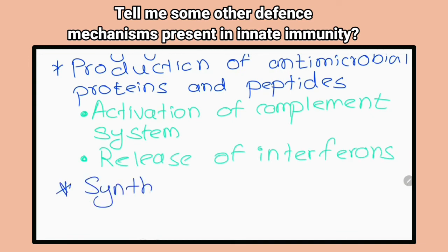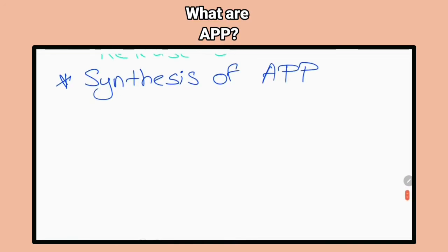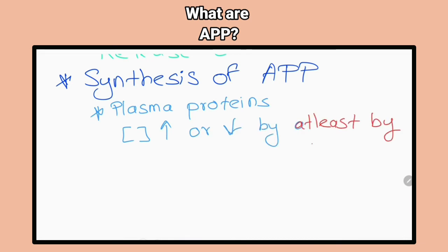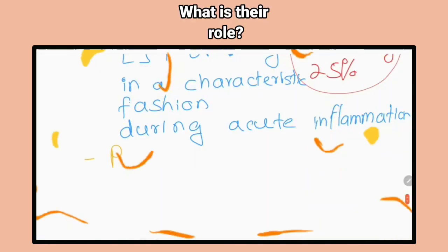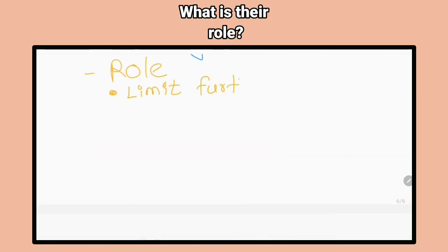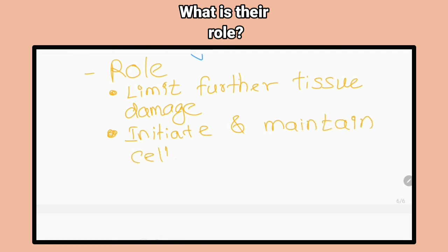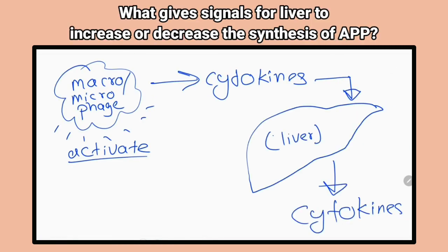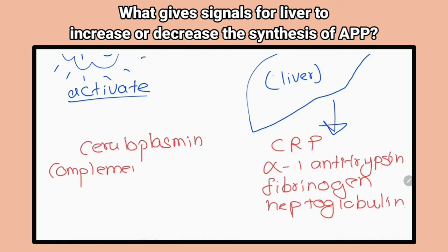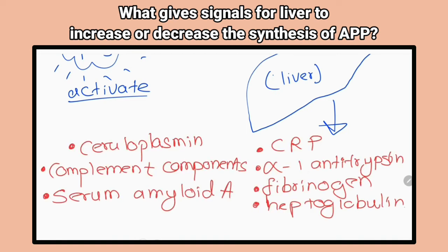Producing acute phase proteins. What are acute phase proteins? A group of plasma proteins whose concentration either increases or decreases by at least 25% in a characteristic fashion during acute inflammation. What is their role? They limit further tissue damage and initiate and maintain cell repair. What gives the signals for the liver to increase or decrease the synthesis of them? Cytokines that are released from the site of injury.